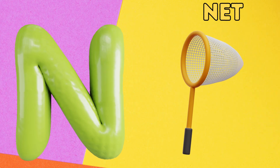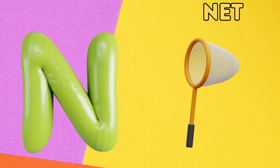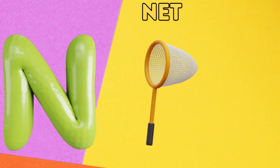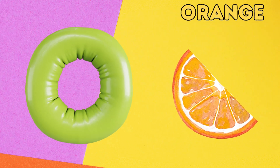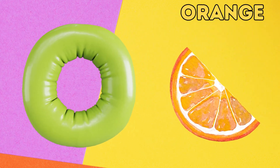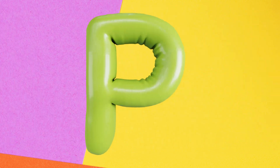N is for net, n-n-net. O is for orange, o-o-orange.